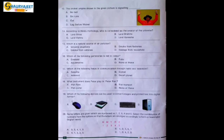Question 13: The cricket umpire shown in the given picture is signalling dash. Options are no ball, six runs, out, leg before wicket. In the given picture, the umpire is raising both hands upwards, meaning he is signalling six runs. So six runs is the correct answer.